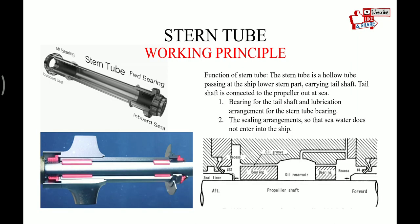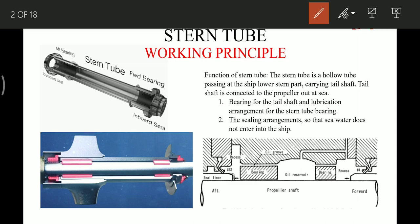The main function of this stern tube is to provide bearing for the tail shaft, and if a bearing is there then some type of lubrication is also required. Previously seawater was used as lubricant, but nowadays in modern ships a closed system of lube oil is used for lubrication of these bearings. The other main function is the sealing arrangement so that seawater does not enter into the ship.